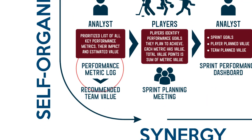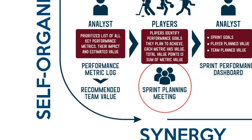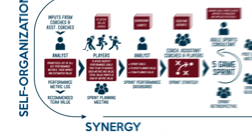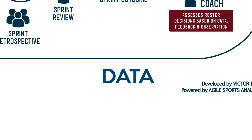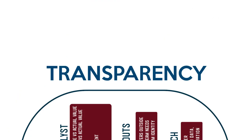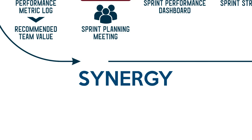New identified analytics get placed into the performance metrics log and discussed at the next sprint planning meeting. The process is repeated, more efficiently and predictably than the previous sprint — continuous improvement is achieved, player IQ is increased, and the team gets closer to synergy.